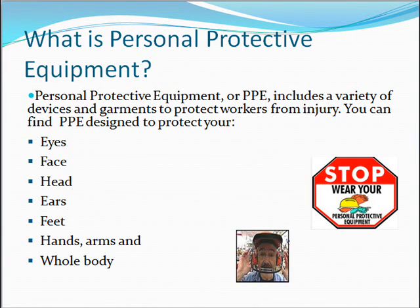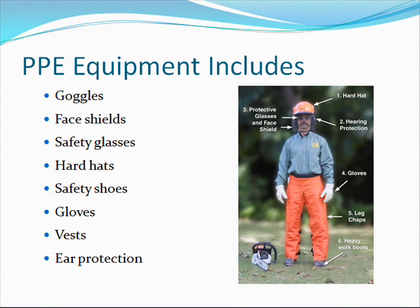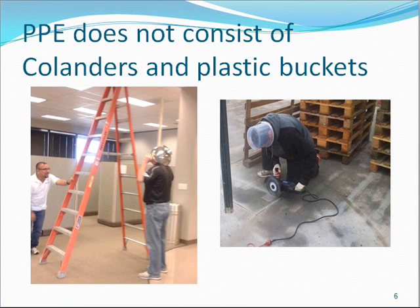Personal Protective Equipment, or PPE, includes a variety of devices and garments to protect workers from injury. PPE can be designed to protect your eyes, face, head, ears, feet, hands and arms, and your whole body. PPE equipment includes goggles, face shields, safety glasses, hard hats, safety shoes, gloves, vests, and ear protection. Note that PPE does not consist of colanders and plastic buckets.